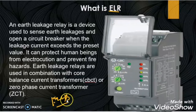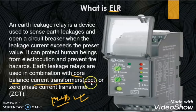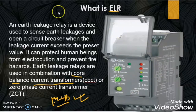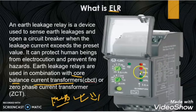Earth leakage circuit breaker senses the earth leakage current and breaks the circuit by its own. But earth leakage relay senses the earth leakage current by the help of core balance current transformer, and whenever the earth leakage relay finds this sensed current more than the preset value for more than the preset time, then it gives command to the circuit breaker or to the contactor to open in order to break the circuit. The ELCB is used for lower current ratings but the ELR can be used for higher current rating operation.